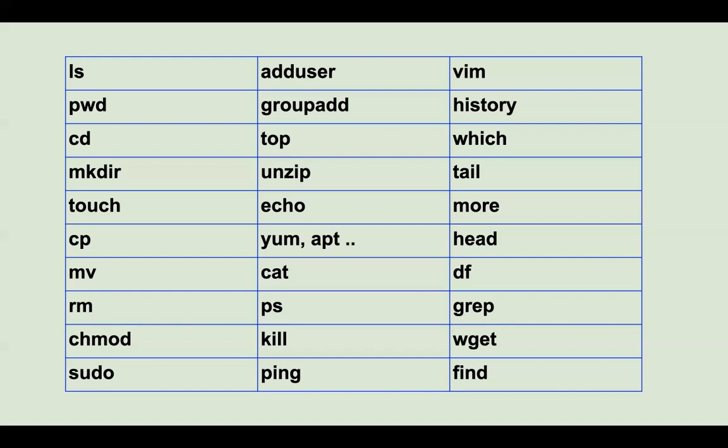Then you have how to copy files from one place to another place, probably a folder — that's the 'cp' command. Whereas if you want to move a file from one folder to another folder, that's the 'mv' command. And to remove a file, we use 'rm'.